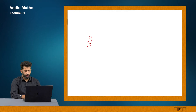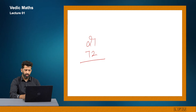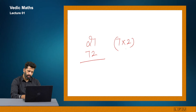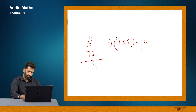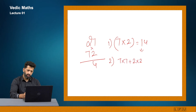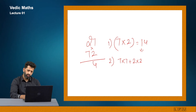Let us multiply 27 with 72 using cross multiplication — 3 steps. Step one: 7 into 2 gives 14, so write 4 and carry 1. Step two — cross multiply: 7 into 7 gives 49, and 2 into 2 gives 4. So 49 plus 4 is 53, plus 1 carry forward gives 54. Write 4 and carry 5.